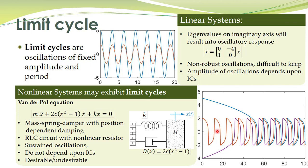For initial conditions x equal to 2, you have periodic oscillations with amplitude nearly equal to 2. For initial conditions x equal to 5, and also x equal to minus 4, in all cases the amplitude of oscillations is always fixed at 2. That is different from the linear system case. Furthermore, these oscillations are robust against uncertainties. We shall discuss limit cycles in more detail in later lectures.